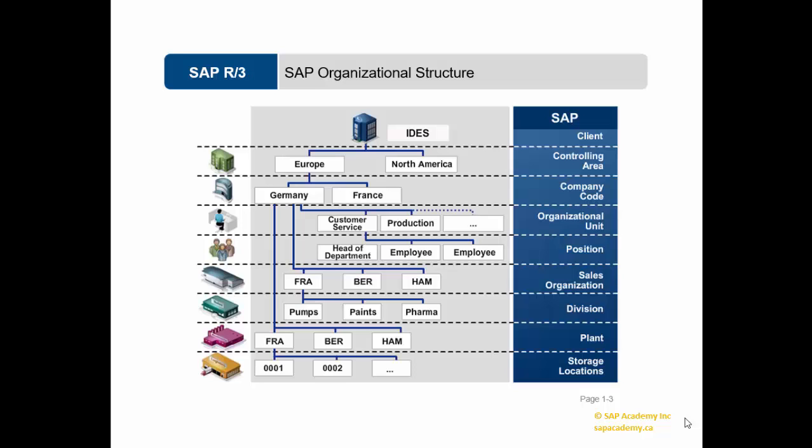The company codes within a controlling area must use the same operational chart of accounts and fiscal year variant. Chart of accounts: Chart of accounts is a variant created at the client level in the SAP FI module, which contains the structure and the basic information about general ledger accounts.